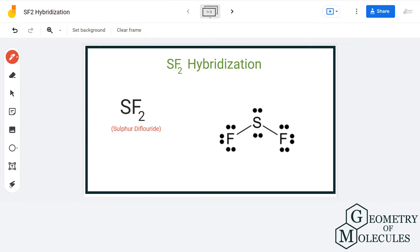One of the easiest ways to find the hybridization is by counting the number of lone pairs attached to the central atom and the number of sigma bonds it forms.